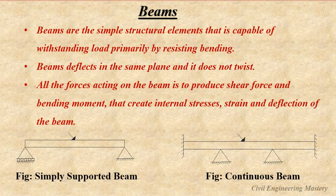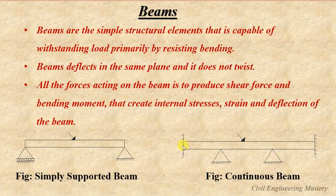Here are a few examples for beams. The first one is the simply supported beam, where the beam is supported at one end with a roller support and the other end with a pin support. Here is the continuous beam, where both ends are fixed and in the middle it has two hinged supports.